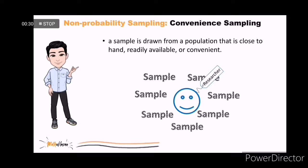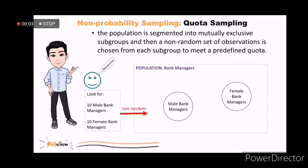In the quota sampling, the population is segmented into mutually exclusive subgroups. In this example, the subgroups are the male and female bank managers. Then, a non-random set of observations is chosen from each subgroup to meet a predefined quota. The predefined quota in this example is 10 respondents for each subgroup. This technique is usually used in market analysis.